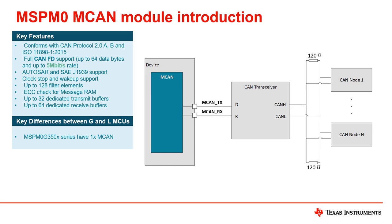Let's take a closer look at the MCAN module. The CAN module of MSPM0 is coupled with a CAN transceiver for CAN network connectivity. MSPM0's CAN module supports CAN protocol 2.0 A and B, well suited for conventional CAN. At the same time, the MCAN of MSPM0 supports flexible data rate — also known as CAN FD — which can reach a maximum of 64 bytes of data and a data transfer rate of 5 megabits per second.